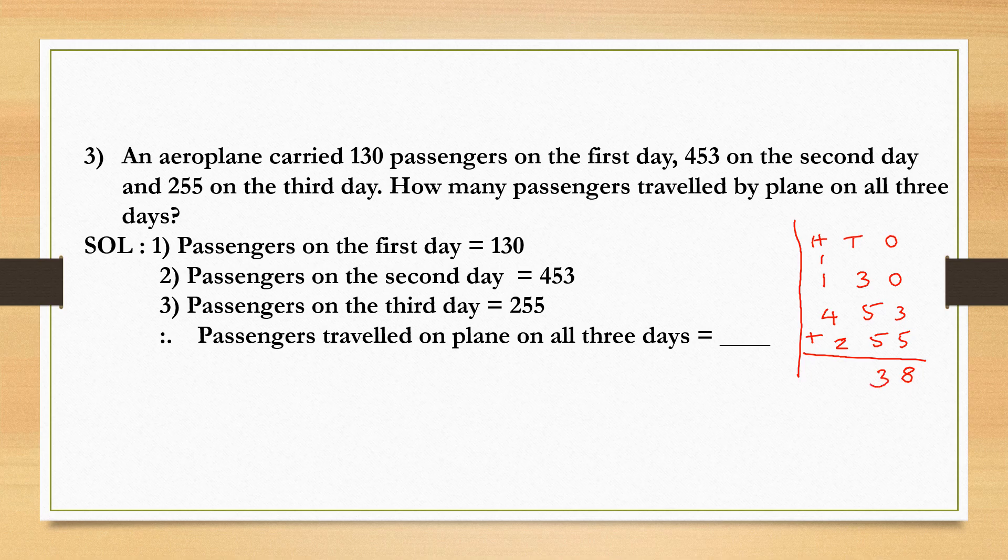4 plus 1, 5. 5 plus 1, 6. 6 plus 2, 8. What did you get? Passengers traveled on all three days equals how many? 838 passengers. So the total number of passengers you have got is 838 passengers.